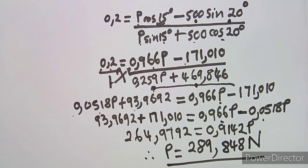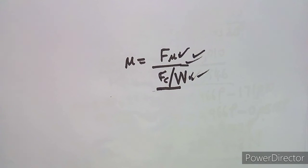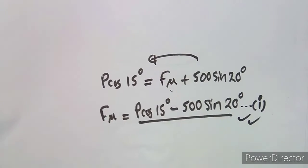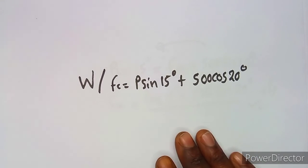That was the working needed to obtain P = 289.848 N. It was important to apply the coefficient of friction formula, determine the frictional force expression, and find the normal force component, since those parallel and perpendicular components are what allowed us to solve for P.